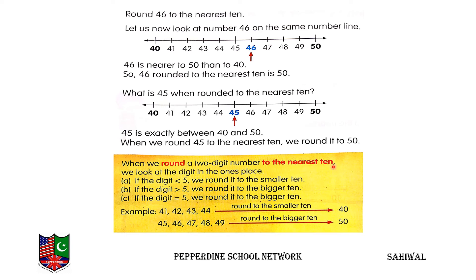When we round a 2-digit number to the nearest 10, we look at the digit in the ones place. If the digit is less than 5, we round it to the smaller 10. If the digit is greater than 5, we round it to the bigger 10. If the digit is equal to 5, we also round it to the bigger 10.